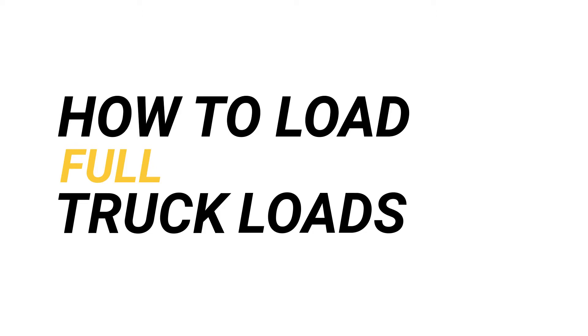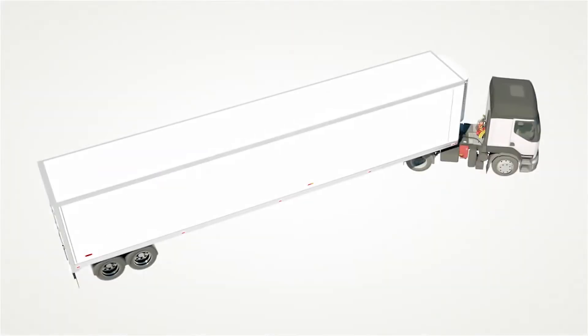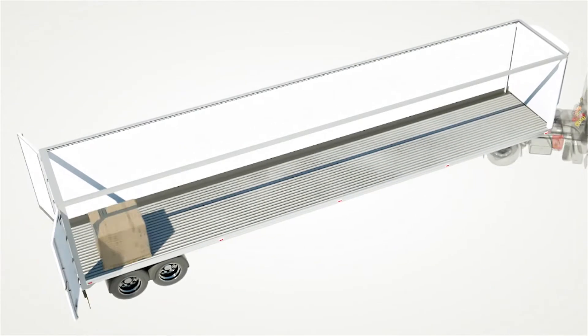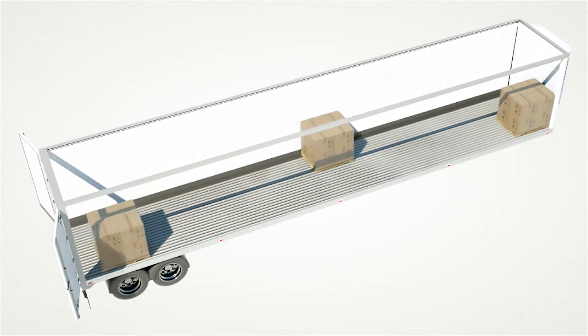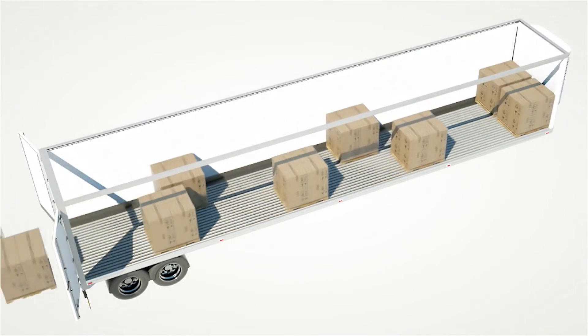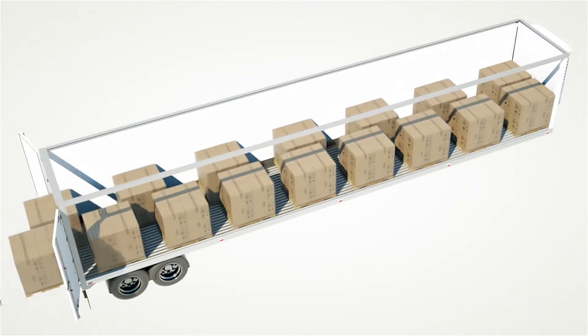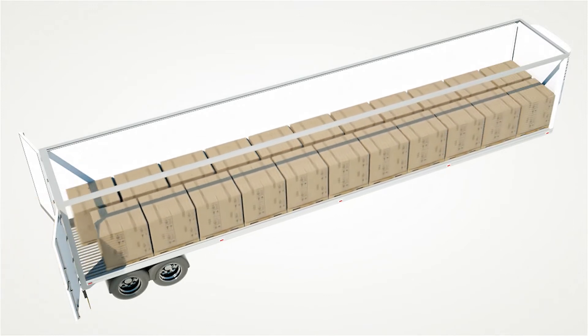To use airbags with full truckloads, load pallets tightly against the nose and sidewalls of the trailer. Each successive pallet should be pushed securely against the previous pallet and the sidewalls. Contact between the pallets, the sidewalls, and the floor produce friction.